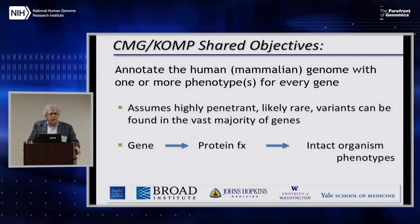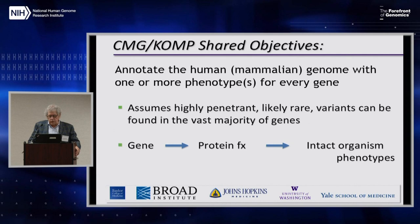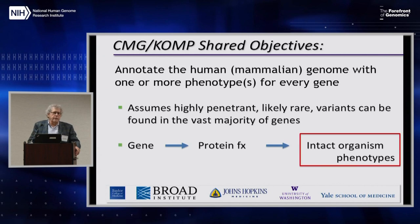It's basically this simple model — the classic genotype-phenotype model — where some perturbation in a gene, largely protein coding genes, leads to a perturbation in protein function, and in the intact organism, some phenotype. And it's this phenotype or set of phenotypes that we want to obtain for every gene in the genome.